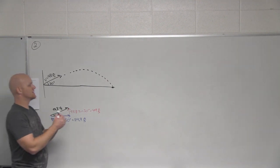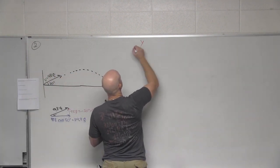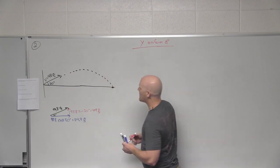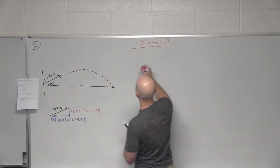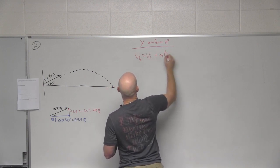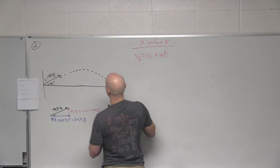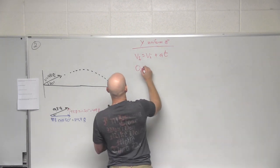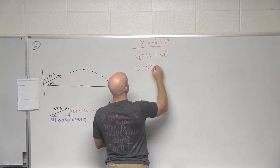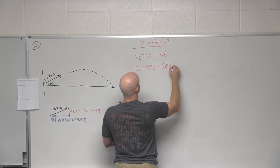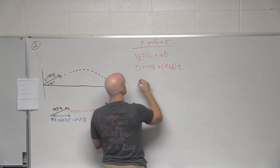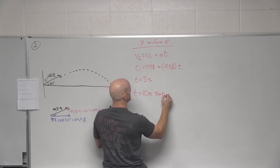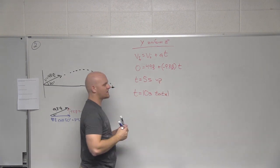In the y direction we have uniform acceleration due to gravity. To find time, we use the same equation as before: v_final = v_initial + at. For the journey up, the final y velocity is zero, initial y velocity is 49 meters per second, and acceleration is negative 9.8 meters per second squared. We still get 5 seconds up, so the total time of flight is 10 seconds.